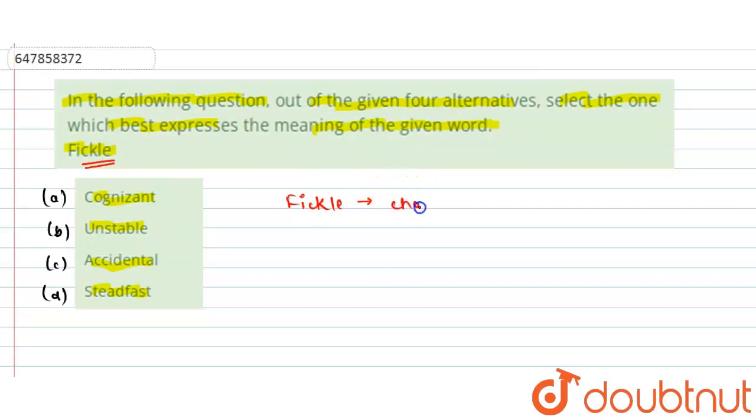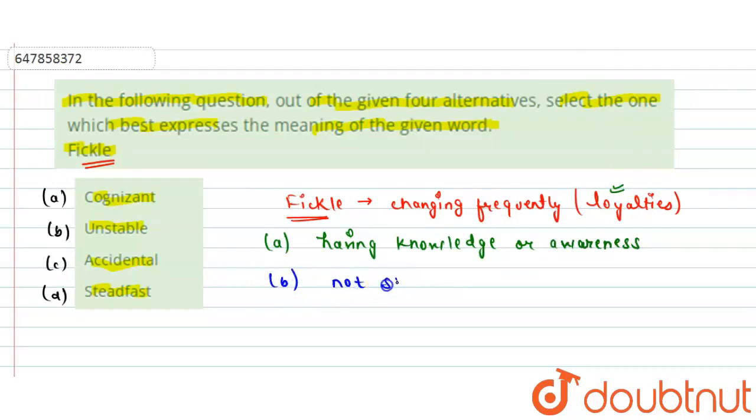Fickle means changing frequently. Changing frequently, basically it is related to loyalties - changing frequently or unstable.